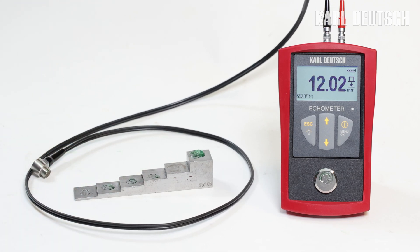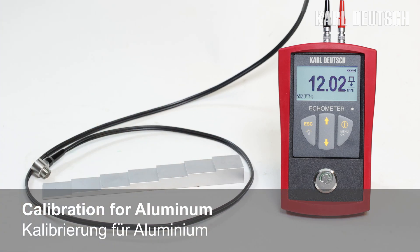It is also possible to measure components made of aluminum, plastic, or other materials. For this purpose, the appropriate sound velocity can simply be set on the device or measured on a calibration block.